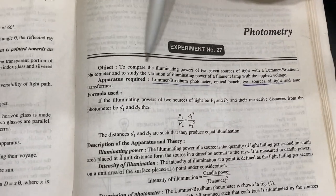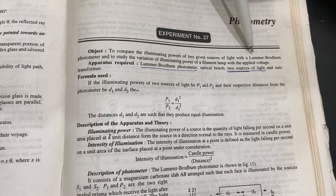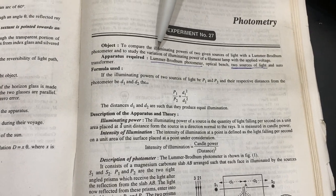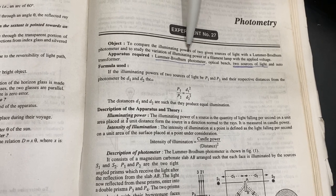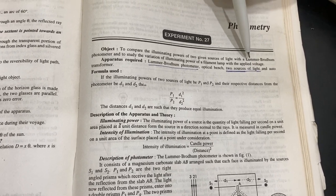First of all, it is to compare the illumination power of two given sources of light. A Lummer-Brodhun Photometer to study the variation of illumination light of a filament lamp with applied voltage.